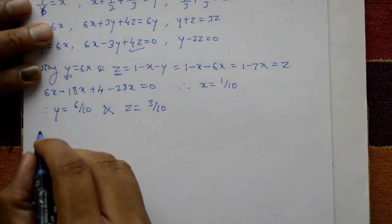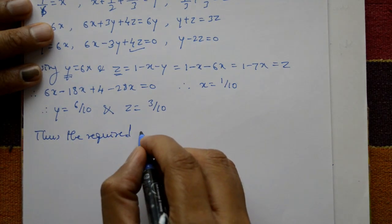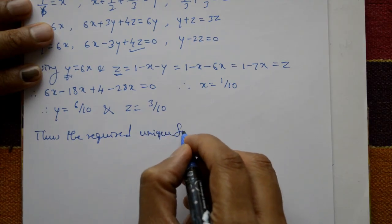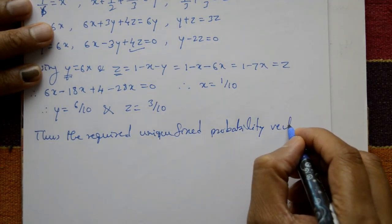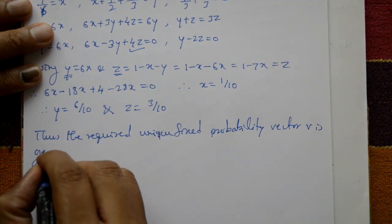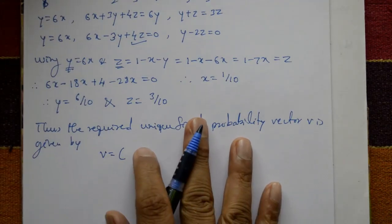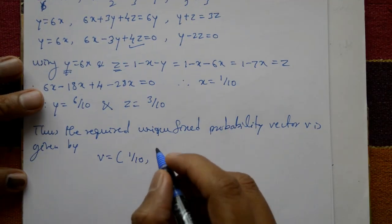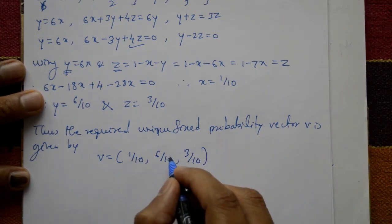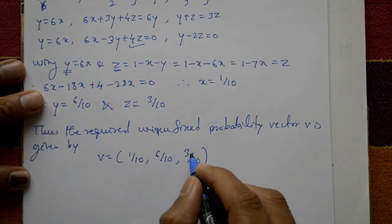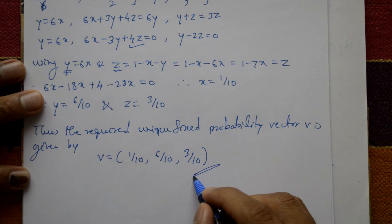Thus the required unique fixed probability vector v is given by v = [1/10, 6/10, 3/10]. Verification: 1/10 + 6/10 + 3/10 = 10/10 = 1. This confirms it is indeed the unique fixed probability vector, and this is the required solution.